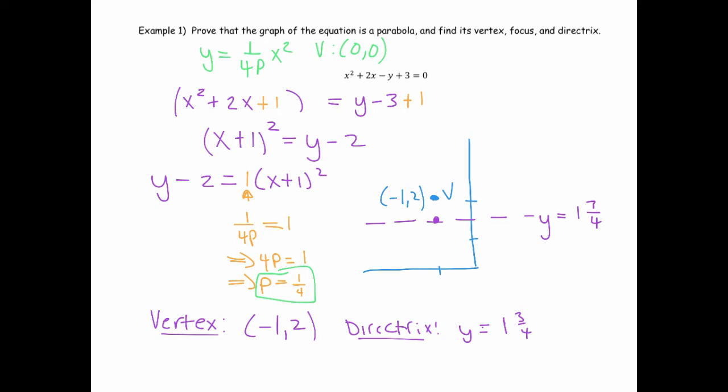Now if I want the focus, then I would just add a fourth to the y value of this vertex, so that'll be here. That should have the same x-coordinate, negative 1, but it would have a y-coordinate 2 plus a fourth, or 2 and a fourth. So now that's the coordinates of my focus.